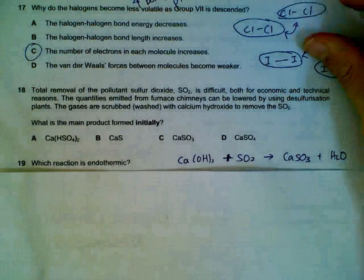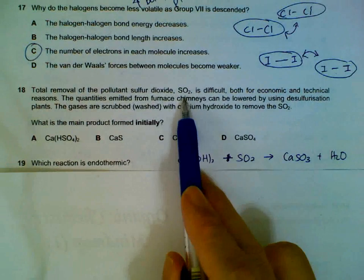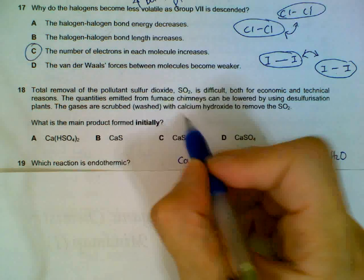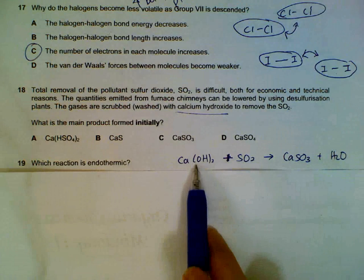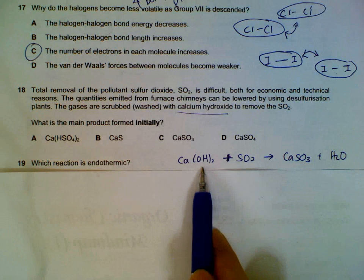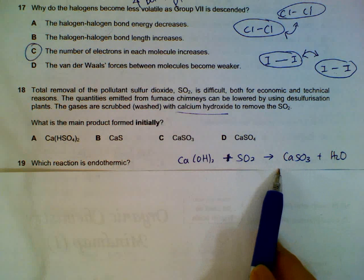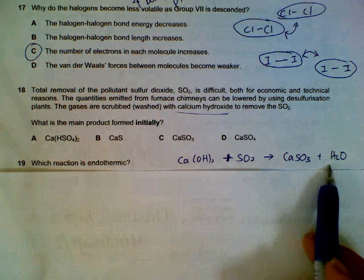Question 18. Removal of sulfur dioxide using calcium hydroxide. So acidic gas and your alkali will get our salt, calcium sulfite, SO3 and water.